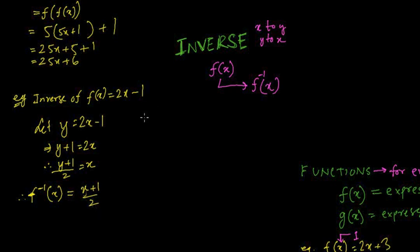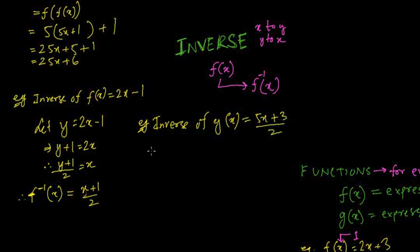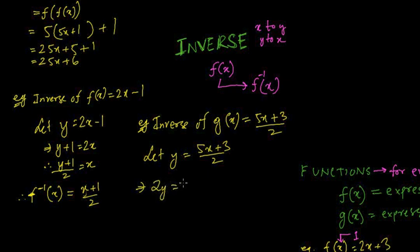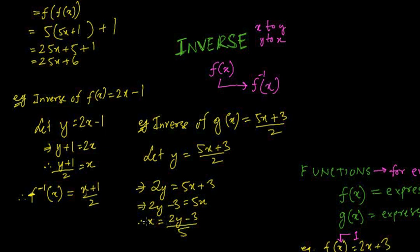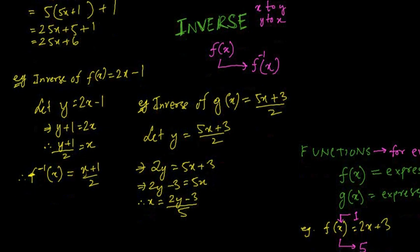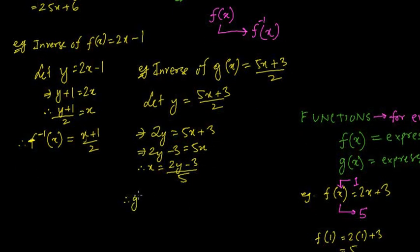Another example: find the inverse of g(x) = (5x + 3)/2. Let y = (5x + 3)/2, so 2y = 5x + 3, giving 2y − 3 = 5x, therefore x = (2y − 3)/5. So g⁻¹(x) = (2x − 3)/5. Remember: convert x to y and y to x — that's the concept of inverse function.